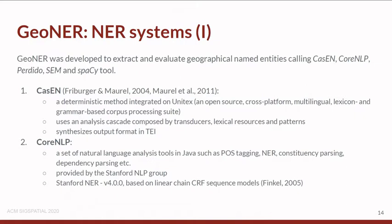The GENRE system was developed to extract and evaluate geographical name entities using Cousin/Kazen, CoreNLP, PeridDo, Sem, and Spacy. Cousin/Kazen is a deterministic method integrated in Unitex, an open-source cross-platform multilingual lexicon-grammar-based corpus processing suite. It uses an analysis cascade composed of multiple transducers and lexical resources, patterns, and finally a synthesizer to transform output in TAI format.